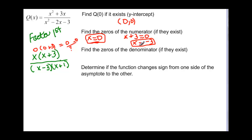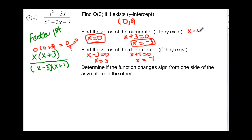Now we want to find the zeros of the denominator. Setting x − 3 = 0 gives x = 3, and setting x + 1 = 0 gives x = −1. What we really found here are the vertical asymptotes — the zeros of the denominator give us vertical asymptotes at x = 3 and x = −1.